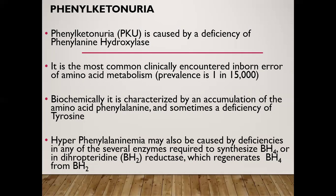Phenylketonuria, abbreviated as PKU, is caused by a deficiency of phenylalanine hydroxylase — the enzyme responsible for the conversion of phenylalanine to tyrosine. This enzyme requires a cofactor, tetrahydrobiopterin, abbreviated as BH4.